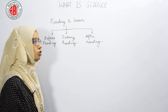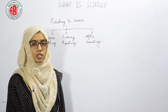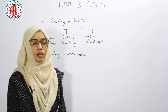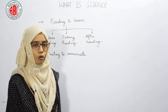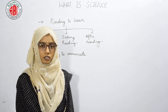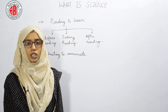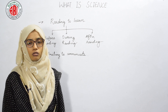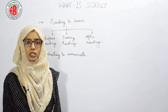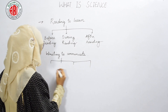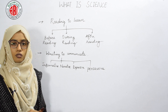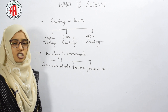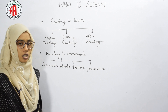The next topic is writing to communicate. Scientists write all the data and information they have gathered to help people understand their ideas. Writing to communicate is a very important part of studying science. There are four types of writing scientists use to describe what they are learning.